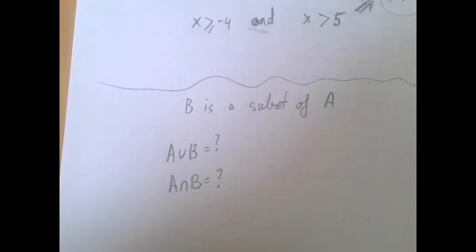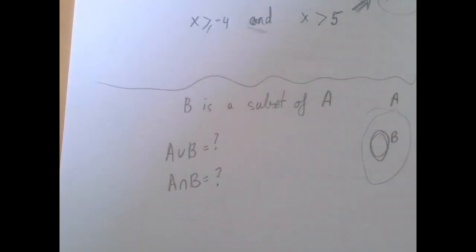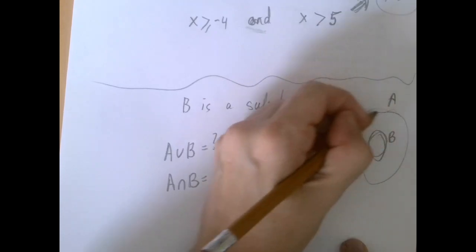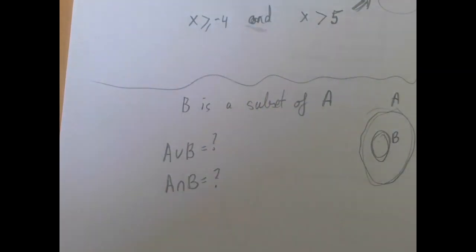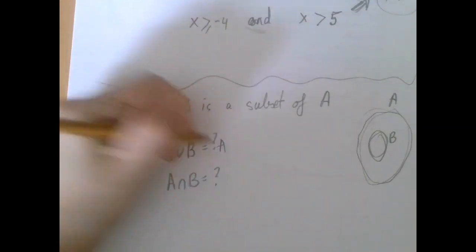Suppose we have a set B that is a subset of A. This is what it looks like. Everything that's in B automatically is in A. So what do we think the union of A and B is? Basically, we would have to put everything from A and everything from B into a same set. But B brings nothing new to the table. So A is good enough for the union.